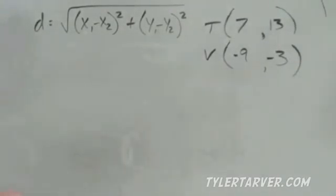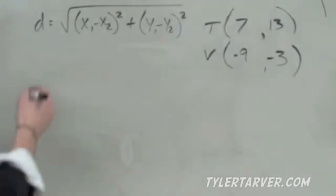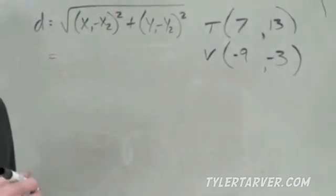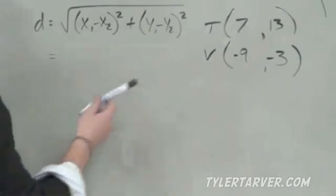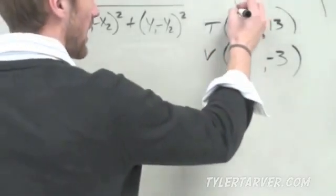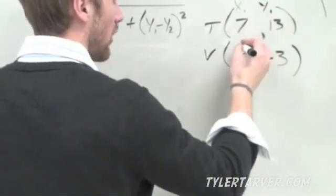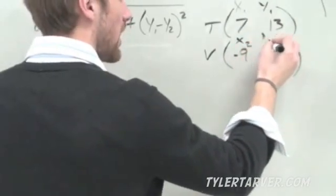Hopefully, you worked it out. Hopefully, you got the correct answer. If not, then I'm going to come to your house and steal all your clothes. I'm just kidding. I won't do that. That's creepy and weird. So, the first thing we do is we label our stuff. We got x1, y1, x2, and y2.